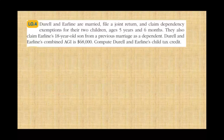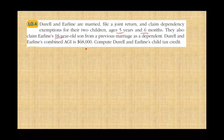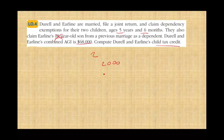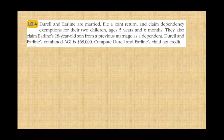Let's take a look at an example. D and E are married filing jointly and claim dependency exemptions for their two children, ages 5 and 6 — both below the age of 17. They also claim Earlene, from a previous marriage, as a dependent. D and E's combined AGI is $68,000. What's their child tax credit? They have two kids, so it's $2,000 times 2, which is $4,000. Pretty straightforward.